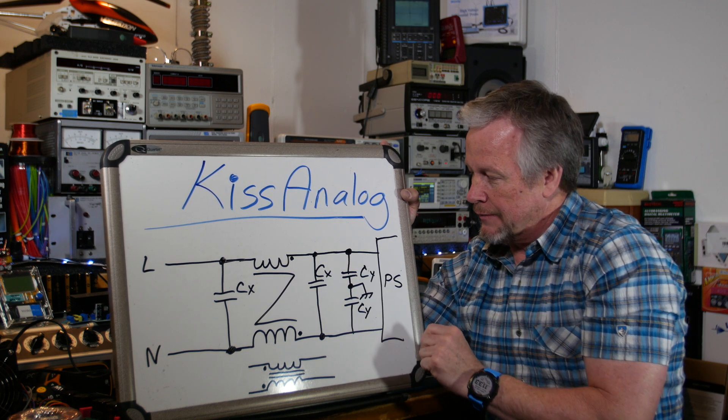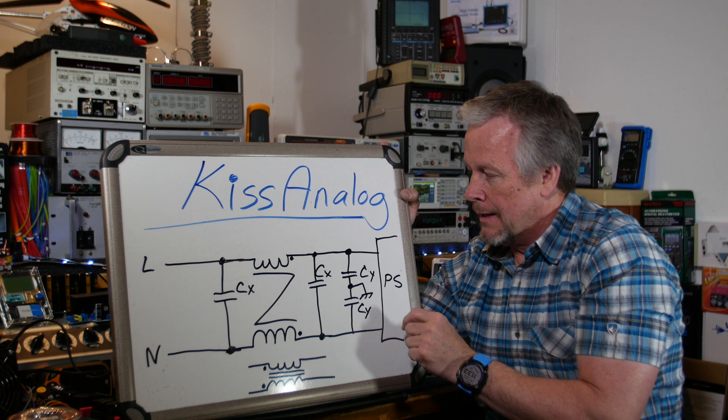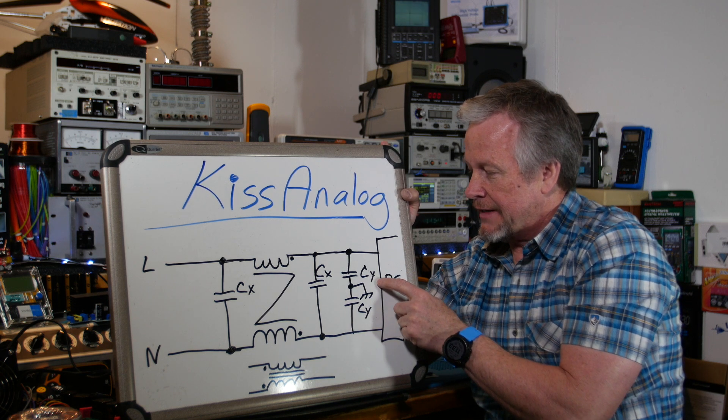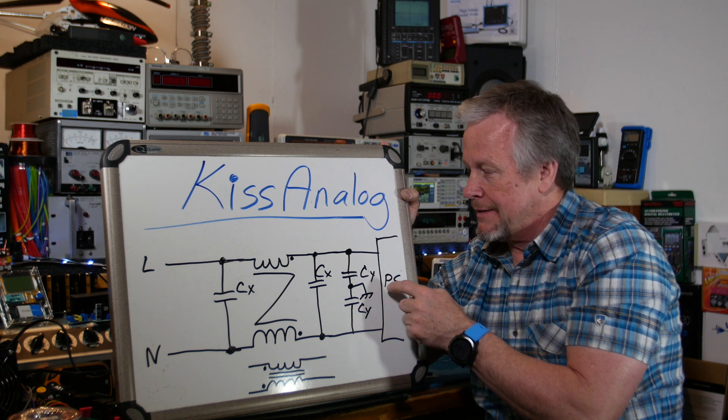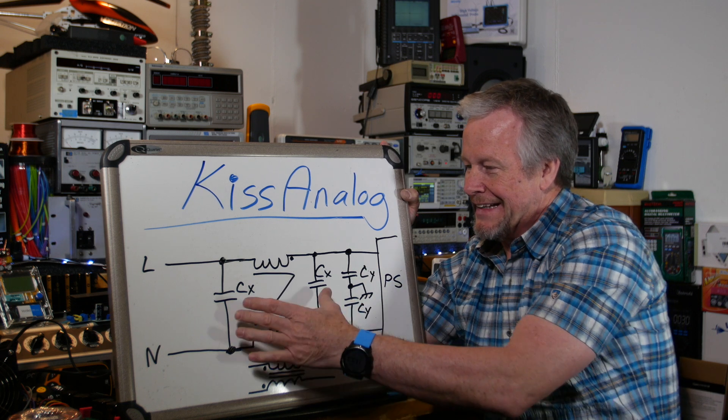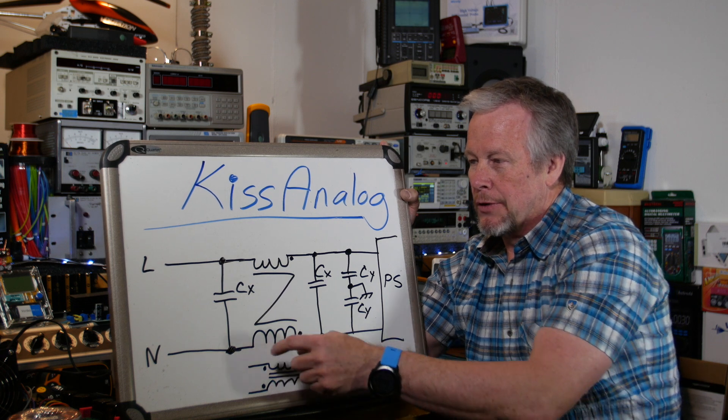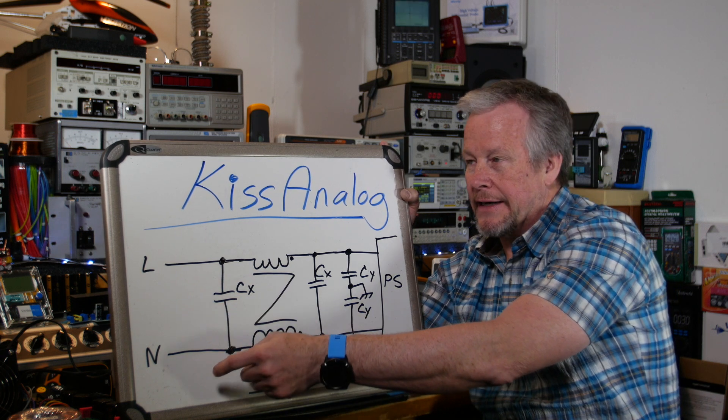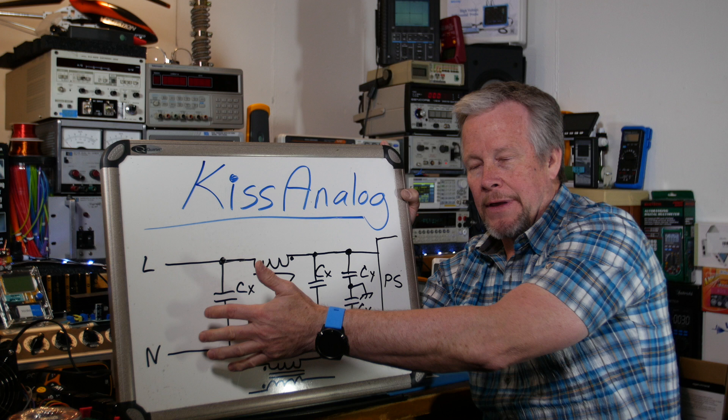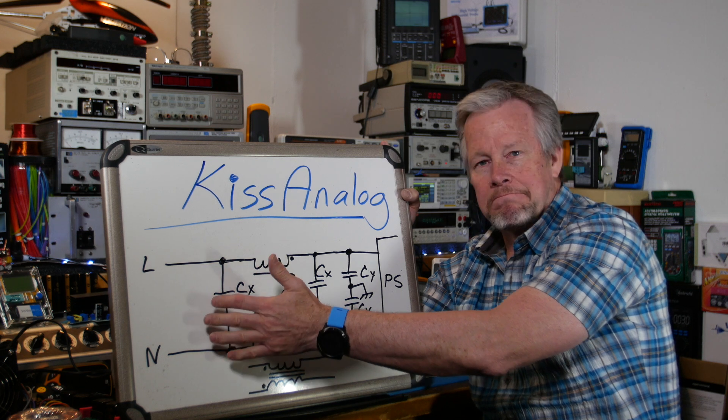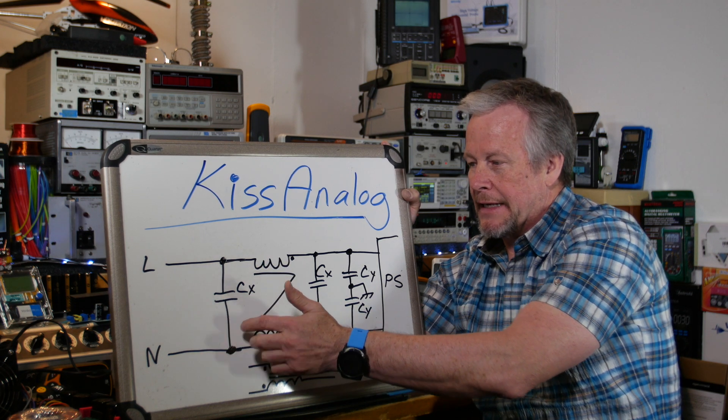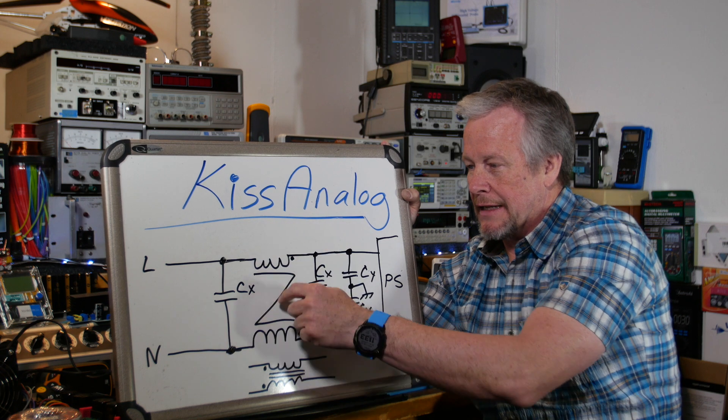Because these guys are tied to line, they're called the Y caps. Kind of looks like a Y, right? And these are X, they're across the lines. Line to neutral, line to line, all that stuff. Any line to line type connection is across the line so it's X.